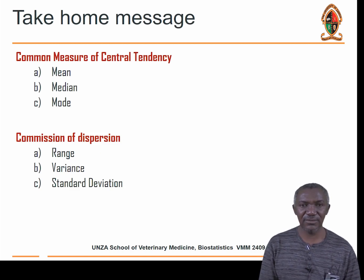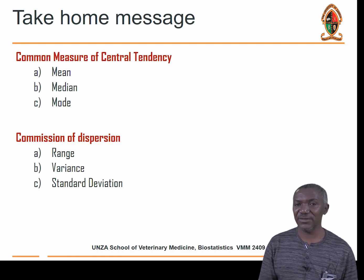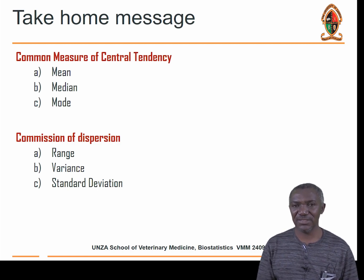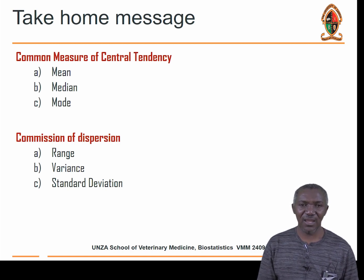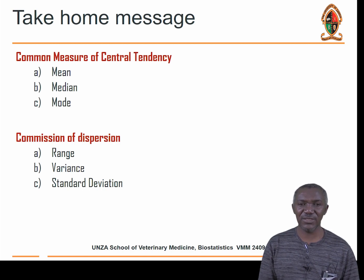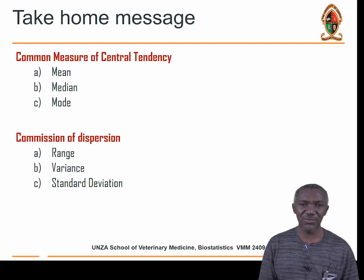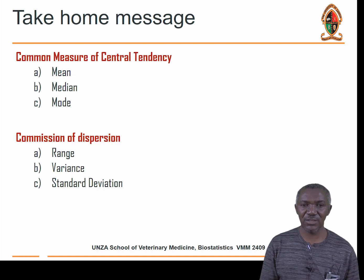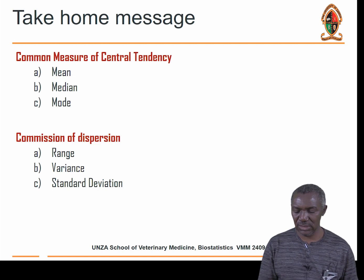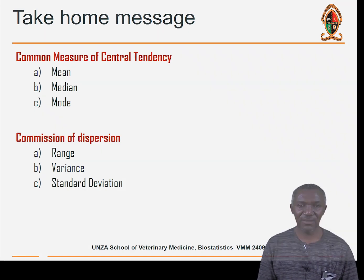In summary, a population is normally described by two parameters: the measure of central tendency and dispersion. Central tendency is estimated using the mean, median, or mode. Dispersion is described using the range, variance, or standard deviation. Thank you for listening.